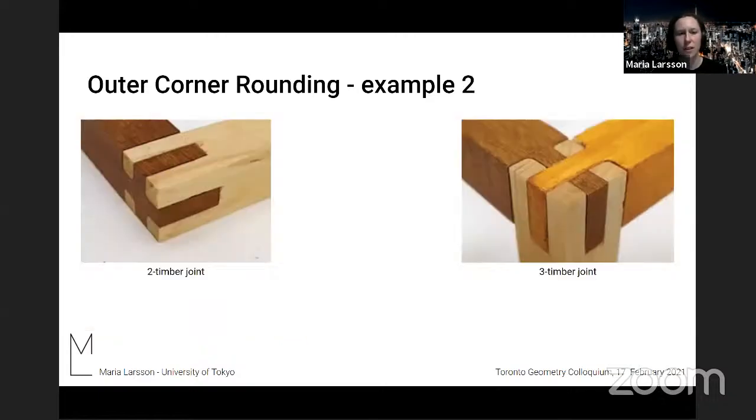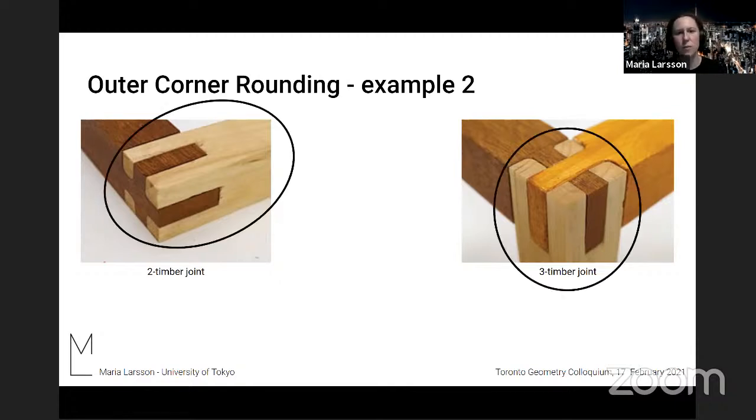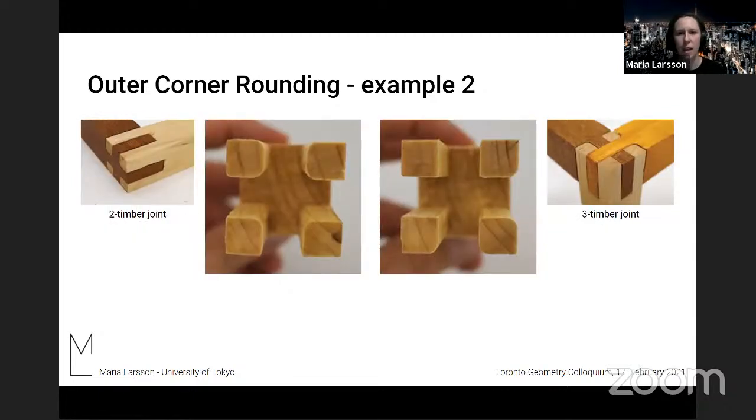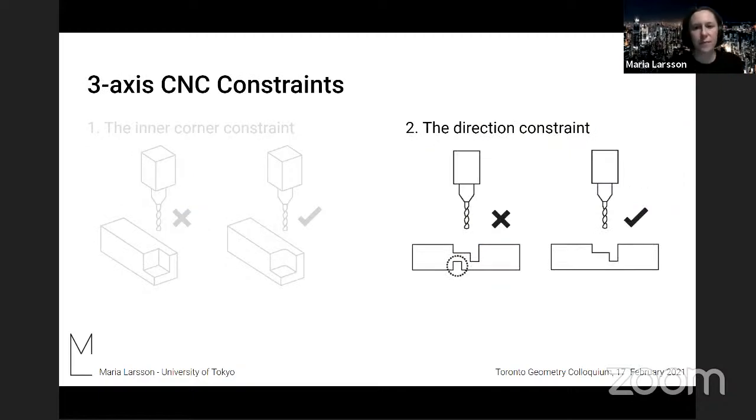And here is another example of the same thing, but a little bit more advanced version because these are two different joints, but this and this timber, they have the same geometry. But actually the corners are rounded differently, as you can see, because the mating timbers have different locations of inner corners.